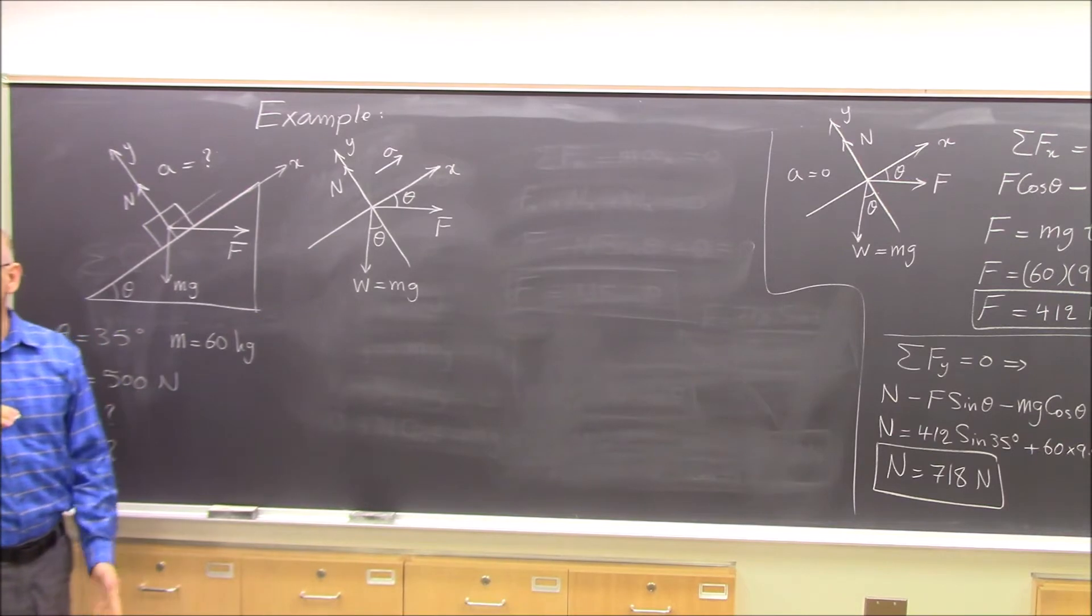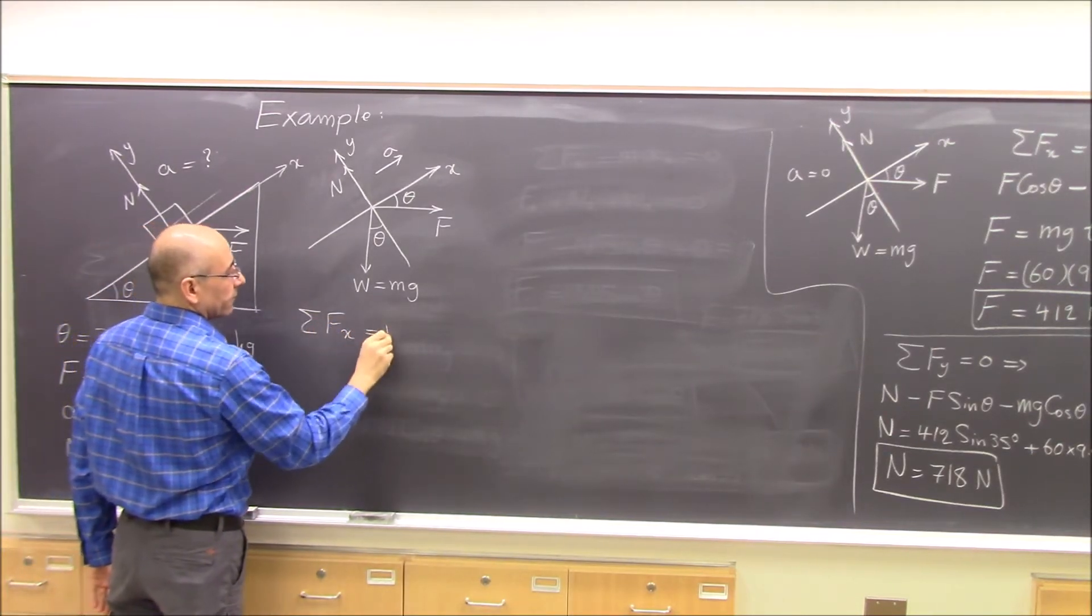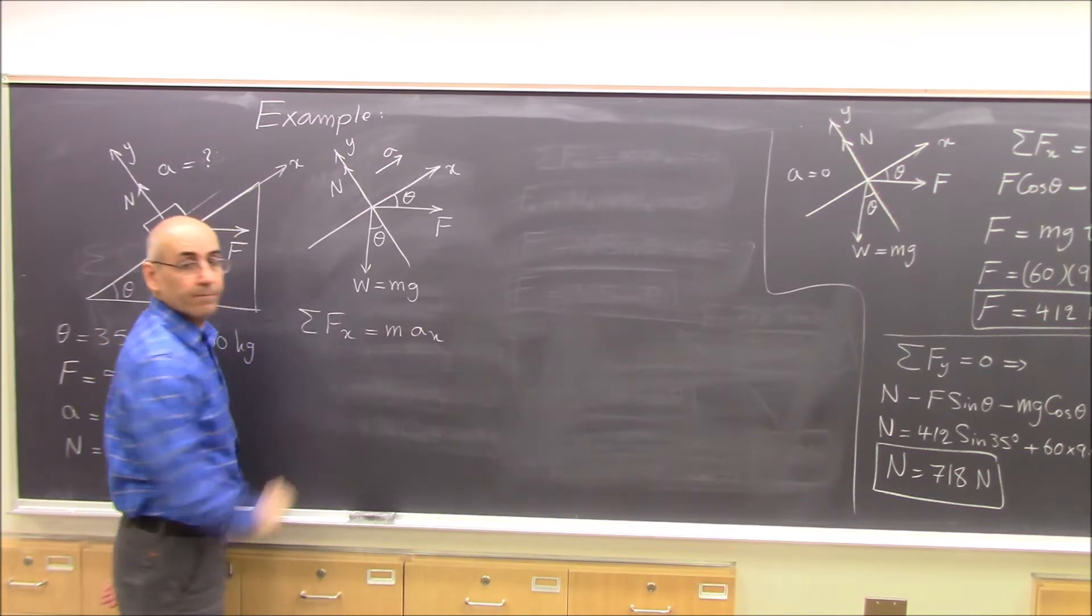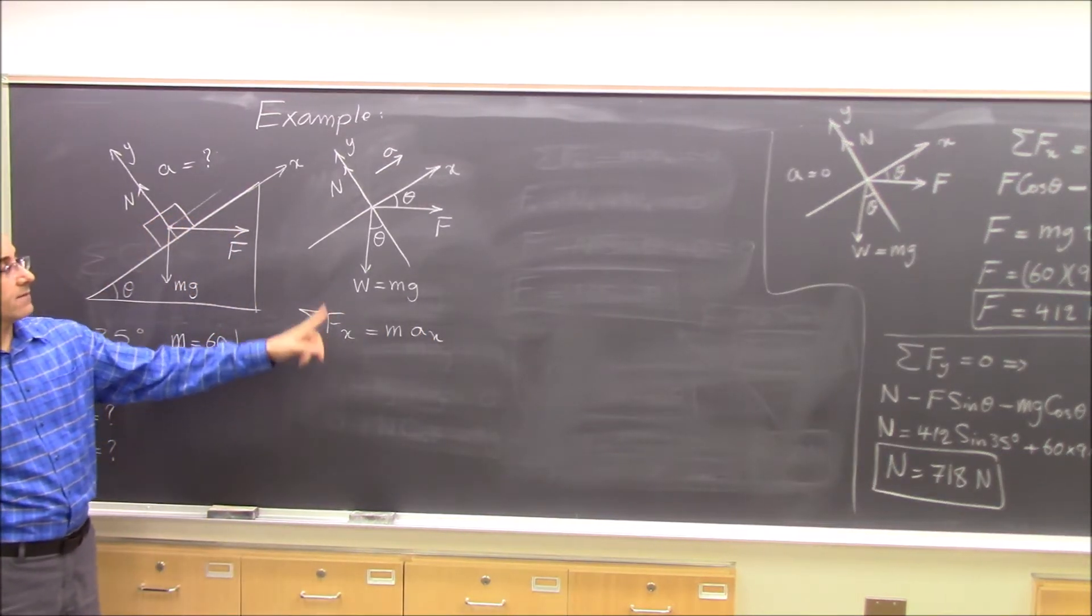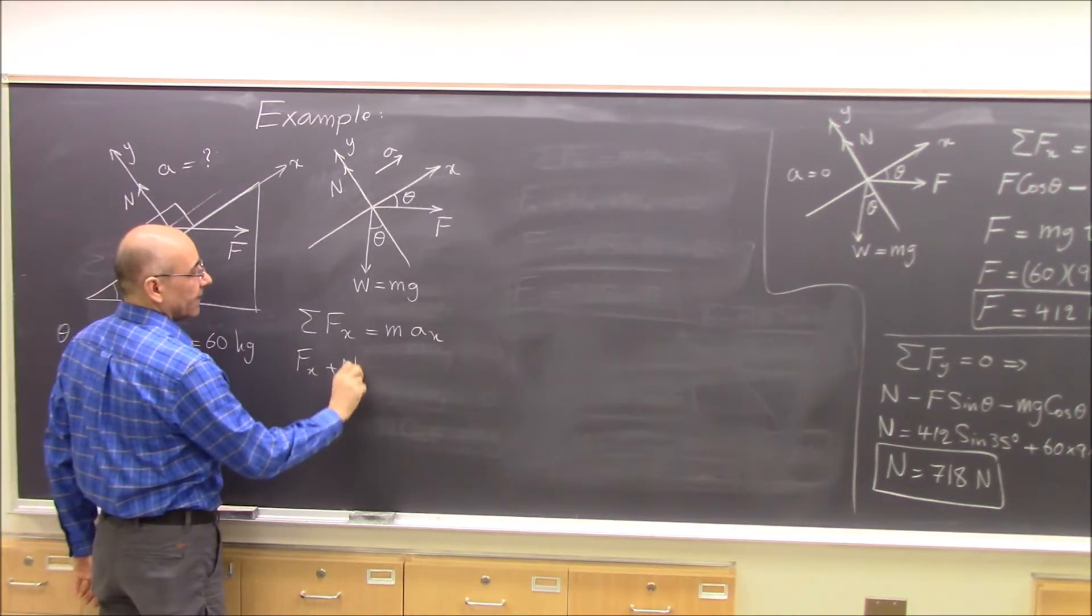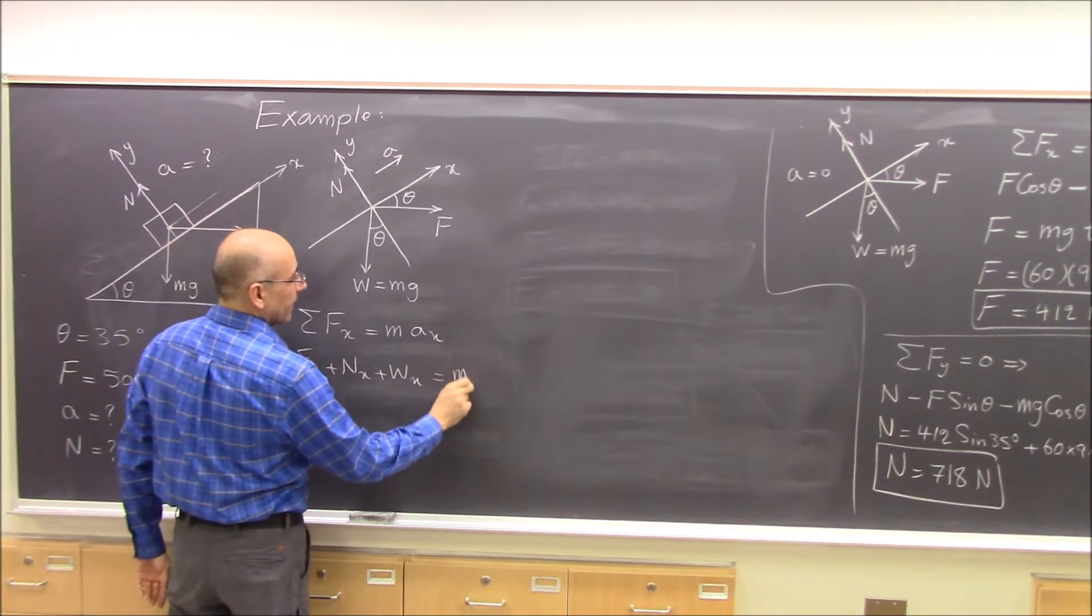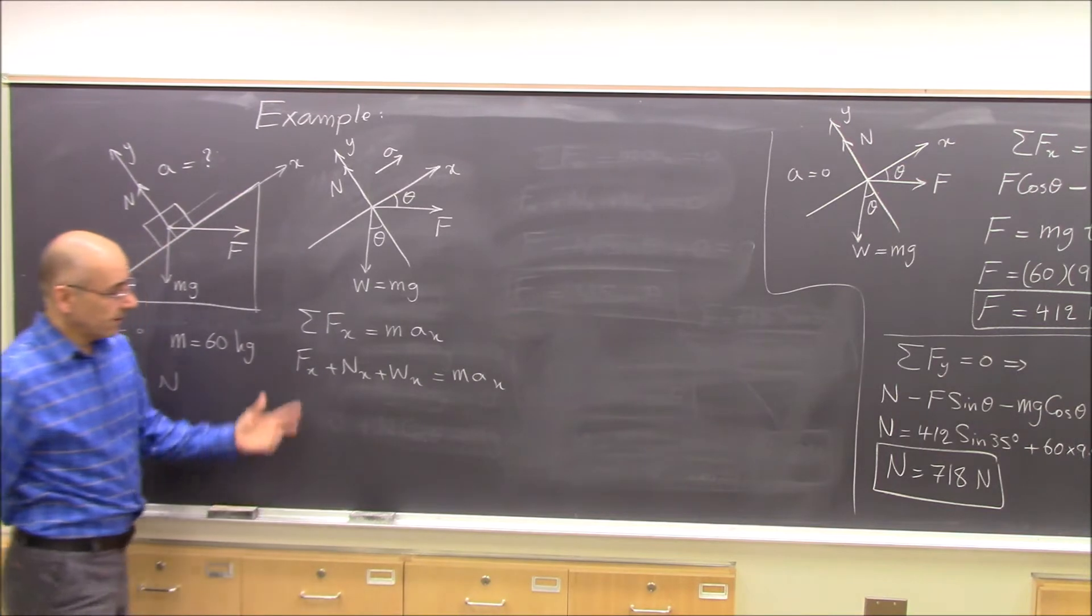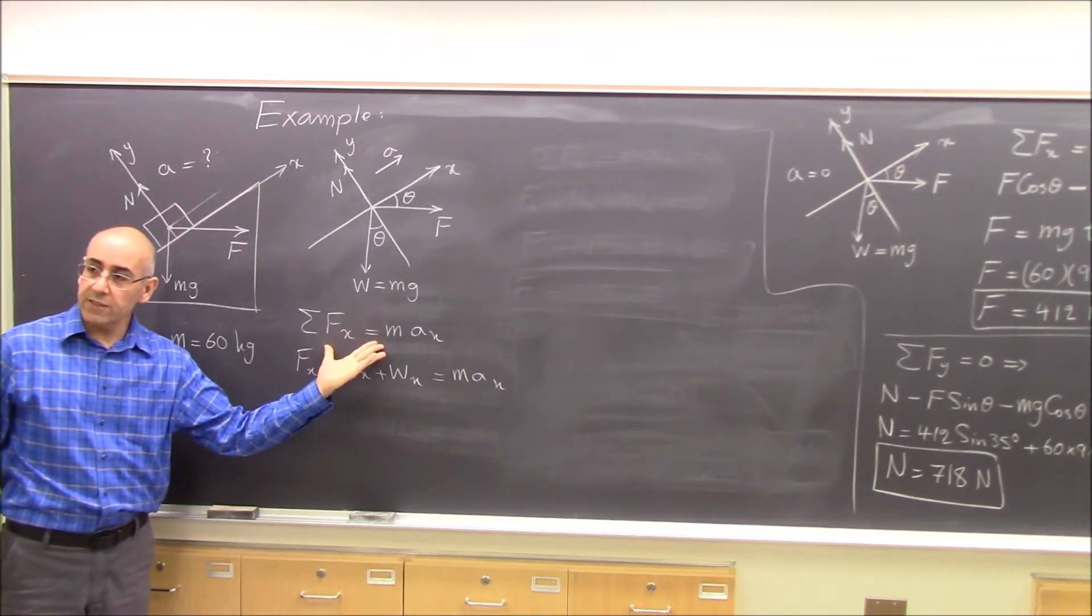Now we apply Newton's law. The sum of Fx equals max. Sum of Fx means x component of all of these added up. Fx plus Nx plus Wx equals max. And I write this again so that you can see. This is what this equation says.